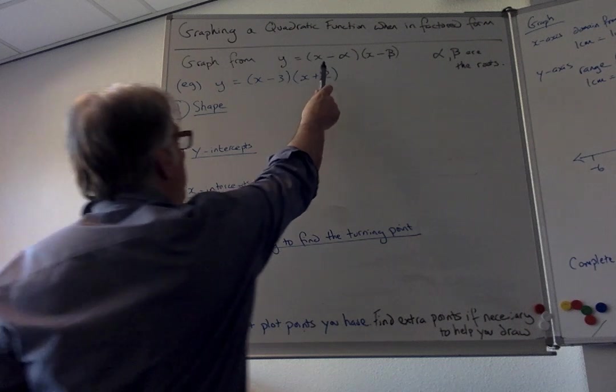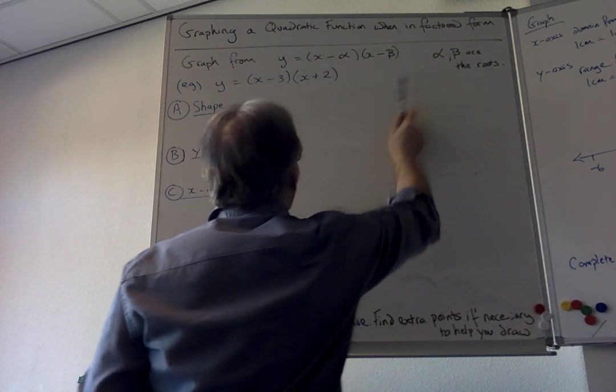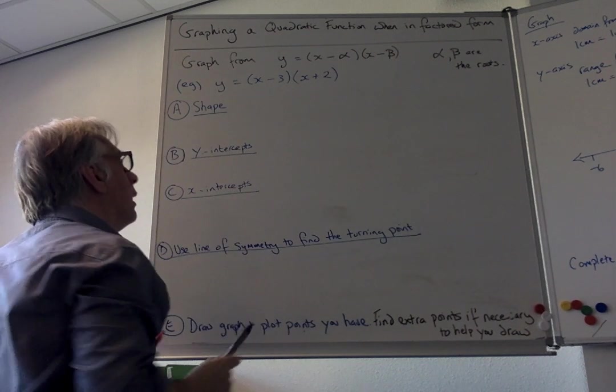A factored form means you've got two parentheses where alpha and beta are the roots, and this is the example we're going to use.